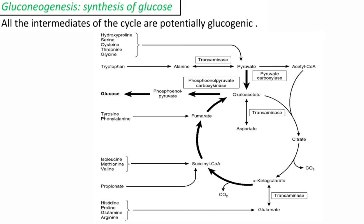In the same way, histidine, proline, glutamine, and arginine can be converted into glutamate, and glutamate on transamination is converted into alpha-ketoglutarate, so these four amino acids also serve as glucogenic amino acids. Tyrosine and phenylalanine supply the carbon skeleton used for the formation of fumarate. Fumarate is converted to malate, malate to oxaloacetate, and oxaloacetate feeds into the reversal of glycolysis for glucose synthesis. In this way, intermediates alpha-ketoglutarate, succinyl-CoA, fumarate, and oxaloacetate serve as sources for glucose synthesis.